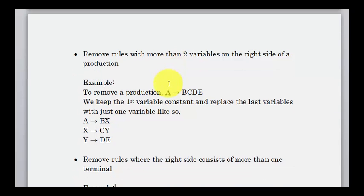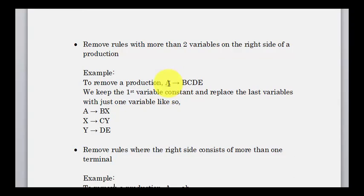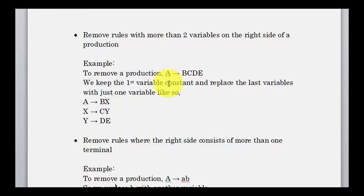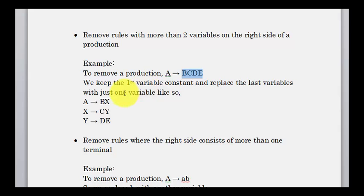These are rules you need to remember to convert a grammar to Chomsky normal form. Practice will make it faster in the exam. Also, remove rules with more than two variables on the right side. For example, if A goes to BCDE, we replace it: A goes to BX, where X goes to CY, and Y goes to DE. We introduce two new variables X and Y by replacing each time, until every production has exactly two variables.